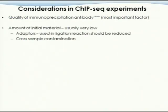The second consideration is the amount of initial material, which is usually very, very low. With DNA or RNA sequencing you can collect large amounts, but with ChIP-seq you target only a small fraction of the entire DNA using an antibody. Even starting from a large amount of material, you will end up with very little input material for the sequencing step.